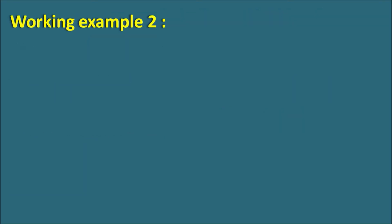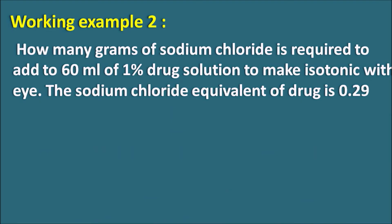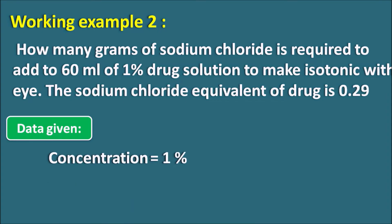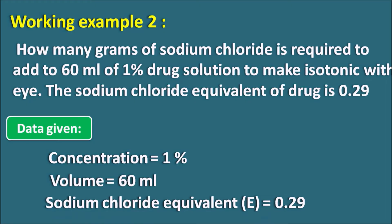Working Example 2: How many grams of Sodium Chloride is required to add to 60 ml of a 1% drug solution to make it isotonic? The Sodium Chloride Equivalent of the drug is 0.29. Data given: concentration is 1%, volume is 60 ml, and Sodium Chloride Equivalent E is 0.29. We have to calculate the amount of Sodium Chloride required to maintain isotonicity.